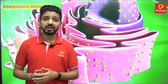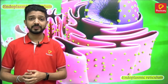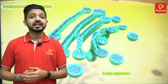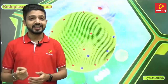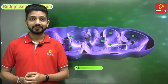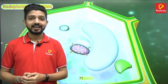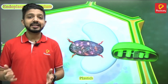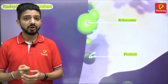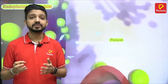The various organelles like endoplasmic reticulum, the Golgi apparatus, the lysosomes, the mitochondria, and the plastids — these various organelles perform very important functions within the cell which help the overall organism.